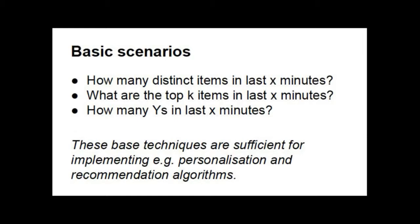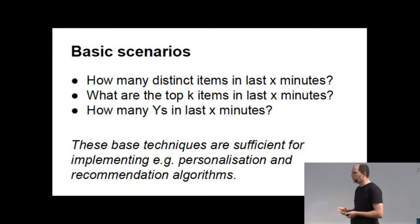So recommendation systems is a bit of magic, but if you just solve these three basic building blocks, counting how many distinct items have passed in the last time window, what items were most popular and can you please give me the count for this particular item. If you just solve these three basic building blocks, you can build complex things like recommendation systems on top of this. So I'll go through each of these and show how it's fairly easily can be done, even with large amounts of data.